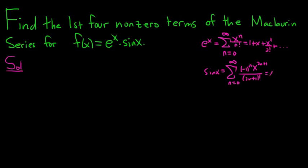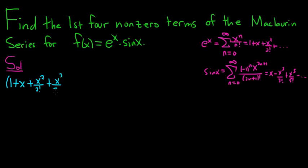If you plug stuff in and work through it, sine x is x minus x cubed over 3 factorial plus x to the 5 over 5 factorial, et cetera. Now let's write it down very carefully. So e to the x is 1 plus x plus x squared over 2 factorial plus x cubed over 3 factorial.